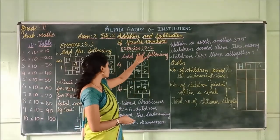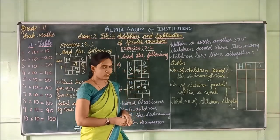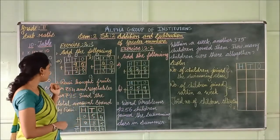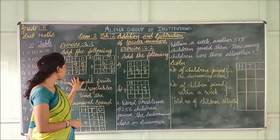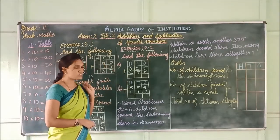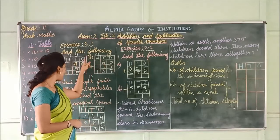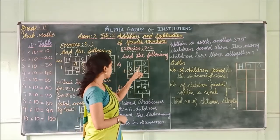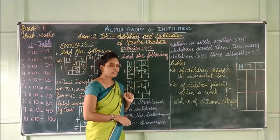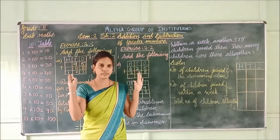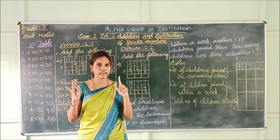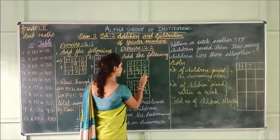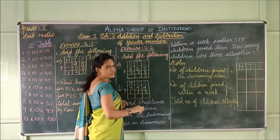See exercise 2.2. Here we have 3-digit numbers with regrouping. We have carry over for the numbers — that is regrouping. Shall we do the problem now? See in ones place: 5 plus 8. Keep 5 in the mind, take 8 fingers. After 5: 6, 7, 8, 9, 10, 11, 12, 13. Write 3 here and carry 1 to the next place value.